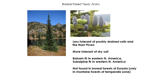Another genus is Abies — fir. Fir is really only found in North America in the boreal forest; we don't see it in the boreal forests of Eurasia, though you do see it in the montane and temperate zones. They're a little less tolerant of waterlogged, poorly drained soils, and less tolerant of fire than spruce, so you find them on better-drained sites that don't burn as often. They're more tolerant of dry soil. The main species are balsam fir in eastern North America and subalpine fir in western North America.